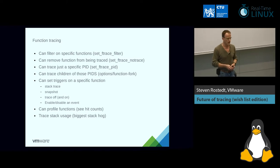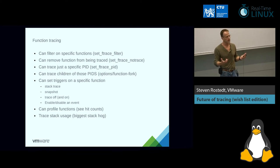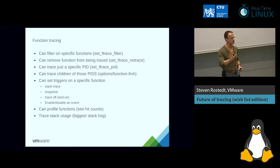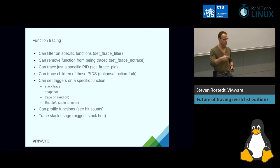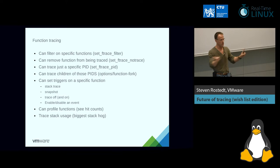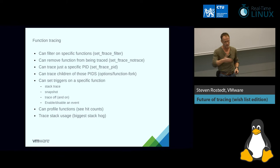Snapshot is a feature where you have two different buffers, kind of like how the latency traces work. You have a separate buffer, and when a function hits a snapshot trigger it will swap the main buffer with a static buffer. The static buffer doesn't change unless it gets swapped into the dynamic buffer that constantly gets updated. So you're tracing along, and if a function that seldom gets hit triggers the snapshot, it swaps the buffers. The static buffer you can look at any time later, so you don't lose data from tracing going on.